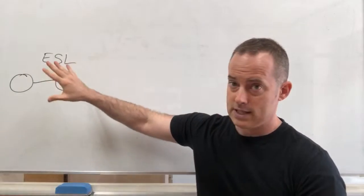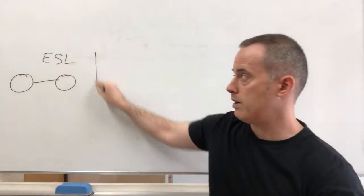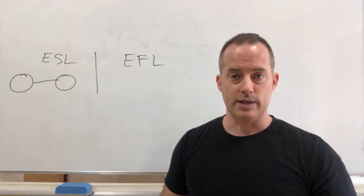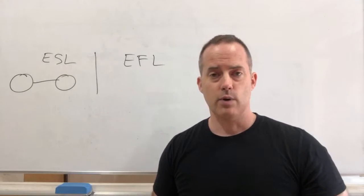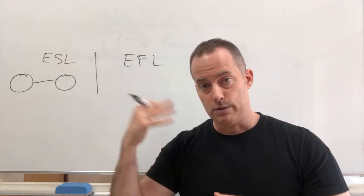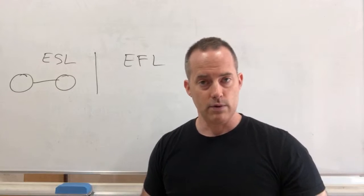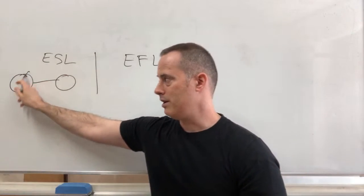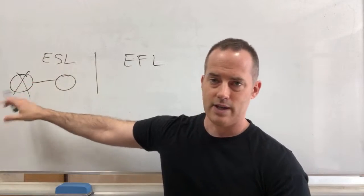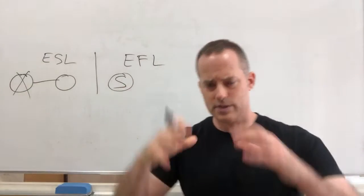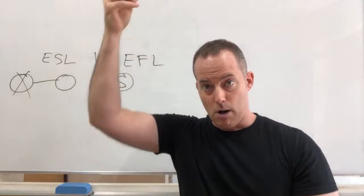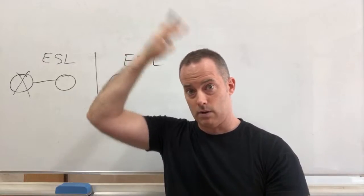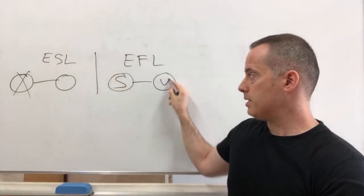Instead of the ESL approach — English as a second language — what we want to do is learn English as a first language. Anyone can do this. This is the same way natives learn vocabulary, and the same way you learned vocabulary in your native language. Even today, if you learn new things on the radio, TV, or whatever in your native language, it's the same process. So English as a first language: we don't want to begin with another language, a translation, or a definition. We really want to begin with a situation — like something happening, like a marker drops on my head. What do I say?